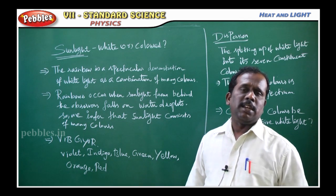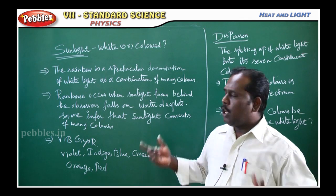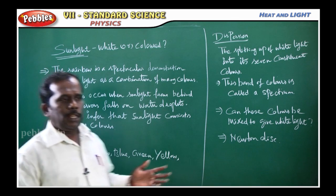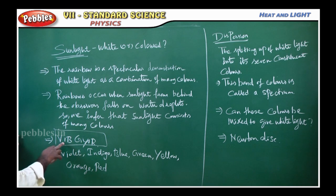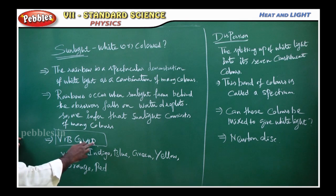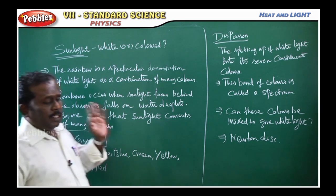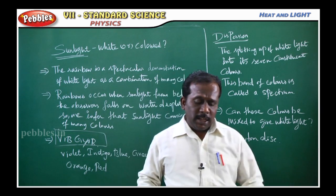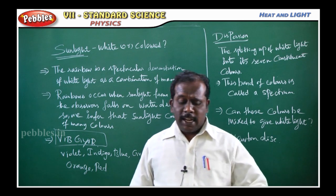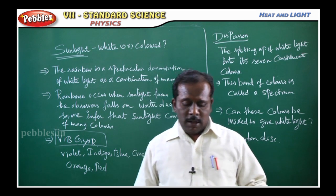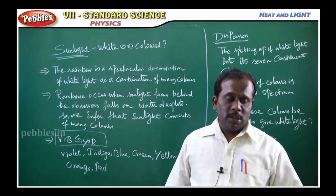How many colors are present in the rainbow? The rainbow forms 7 colors, which we observe. That word is VIBGYOR — Violet, Indigo, Blue, Green, Yellow, Orange, Red. So the 7 colors form the spectrum. We observe that white light is made up of 7 colors and it is possible to split it into its different constituent colors.